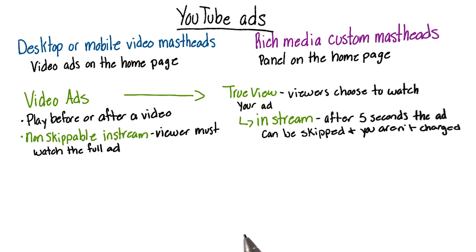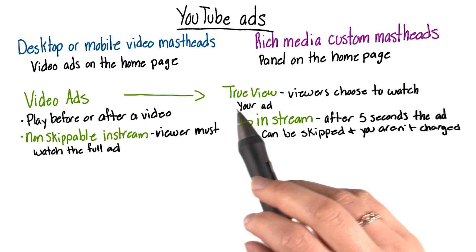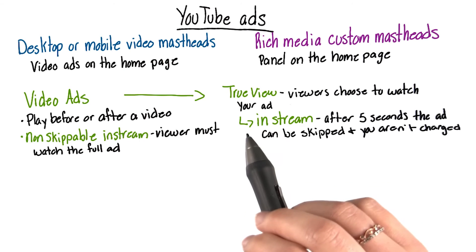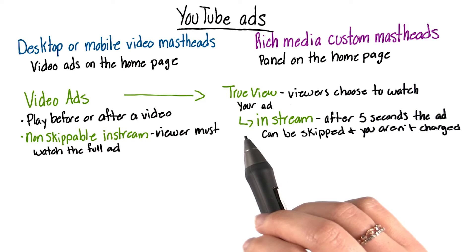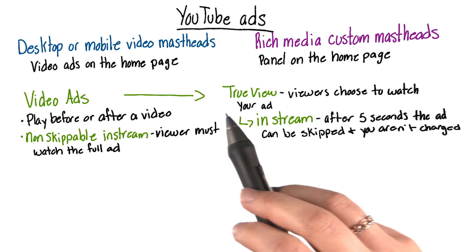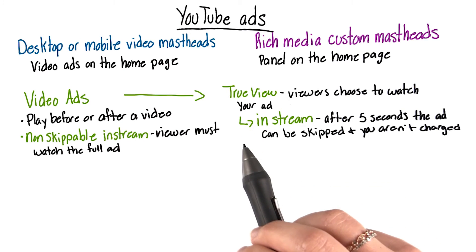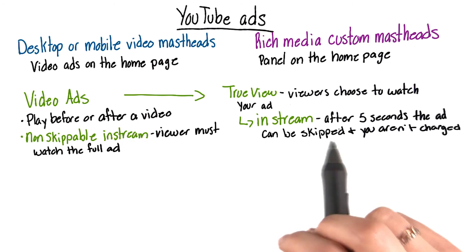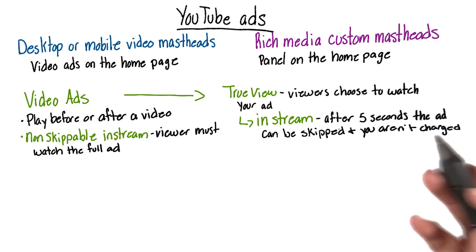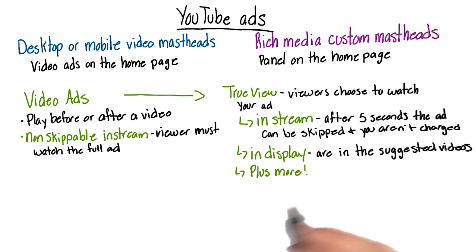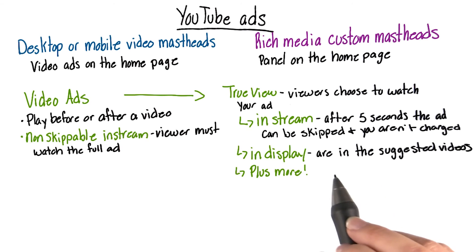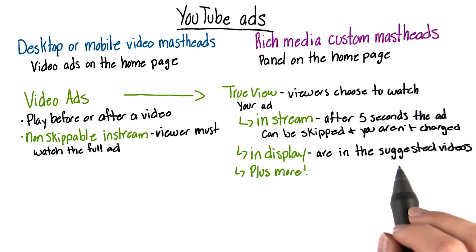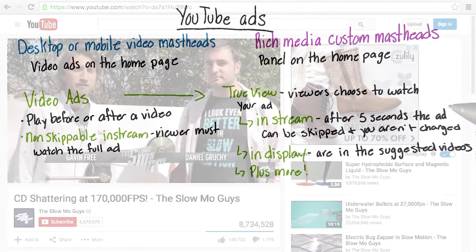For skippable ads, you can go to the TrueView format, and there are a few different types of TrueView ads. You have the in-stream ads that play before a video, and you're allowed to skip after five seconds. You could also have display ads that are suggested videos in the suggested video list.